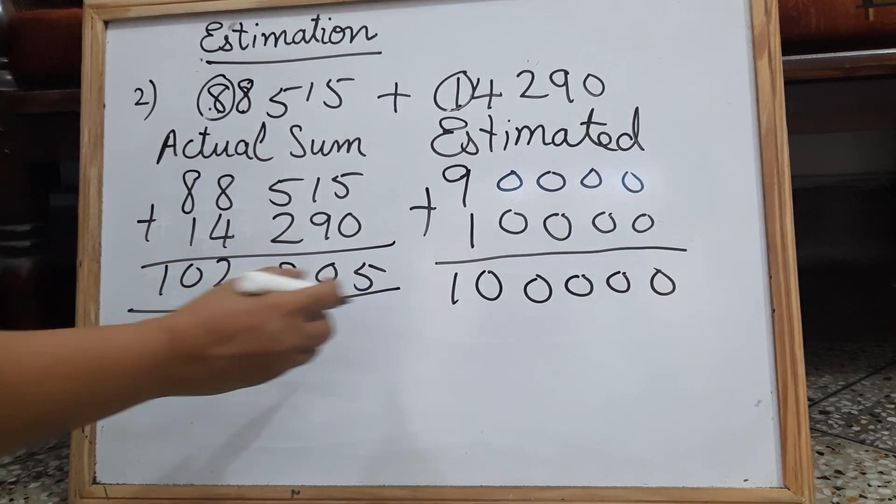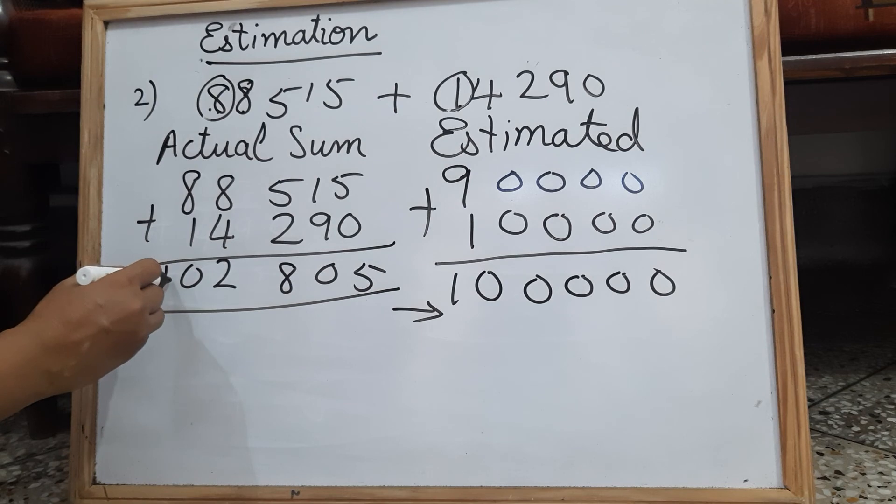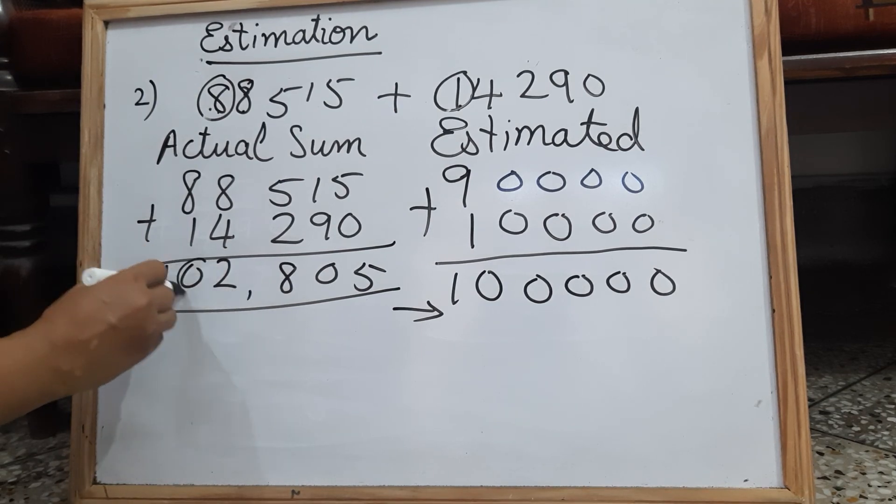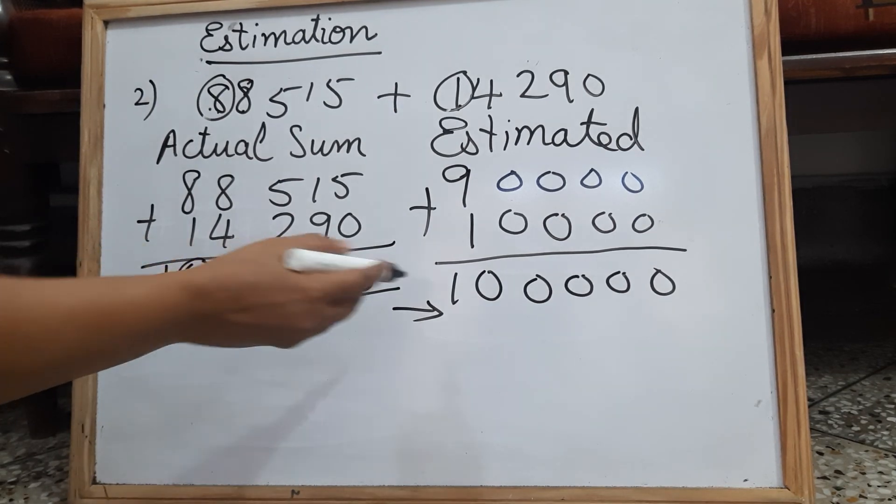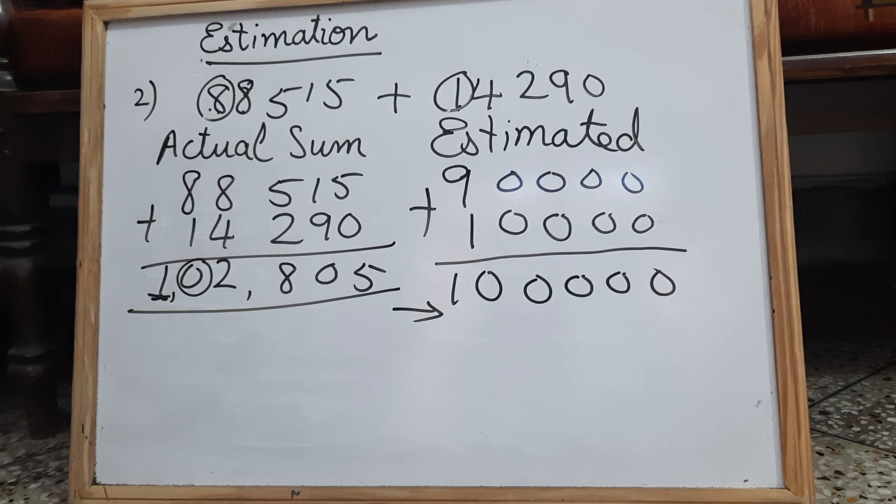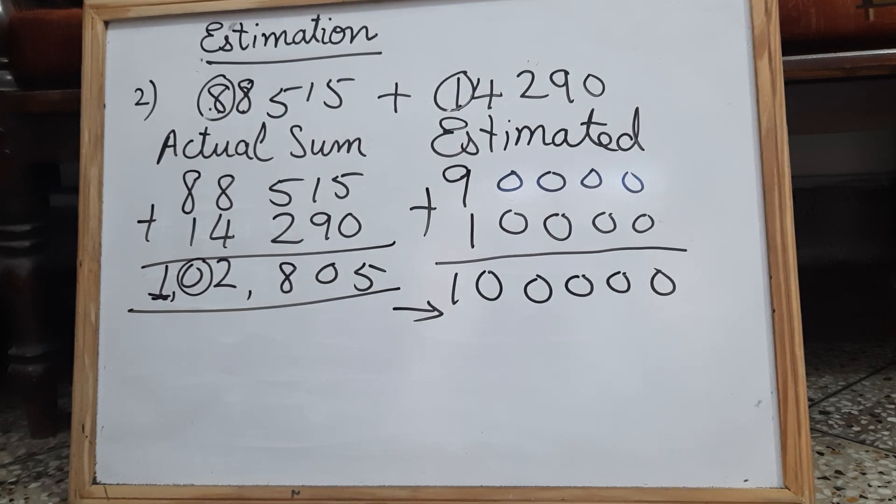See children, if you estimate this also, you get 100,000. So like this, now you can practice the estimated and find the estimated sum, even the actual sum. Practice well children.